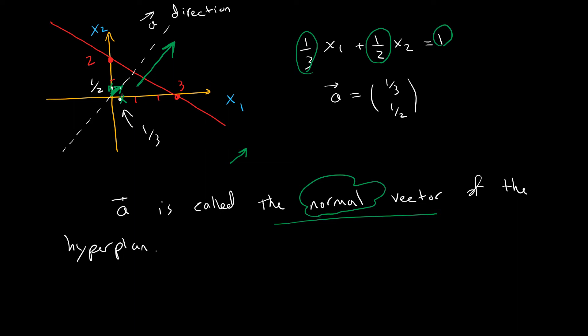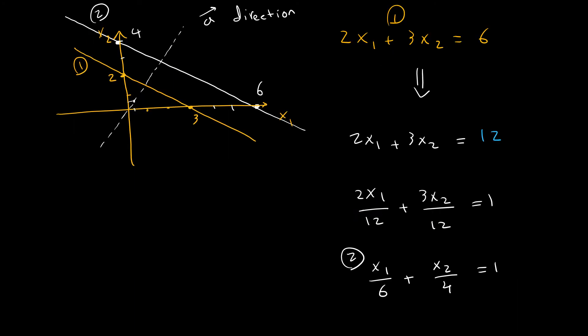Now let's see how we can use this for two parallel hyperplanes. Let's say we have the first hyperplane as the one we discussed, and the second one keeps the same a but changes b to 12. If I make the right-hand side 1, I get x1/6 + x2/4 = 1. This tells me the intersection with x1 is 6 and with x2 is 4.